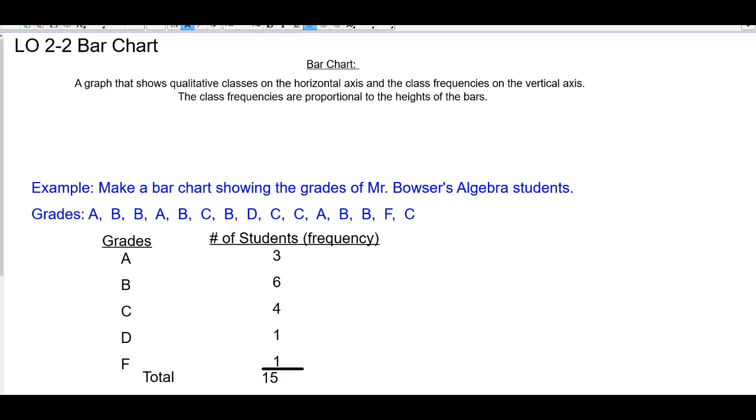Now let's take a look at learning objective 2-2, bar charts. A bar chart is described as a graph that shows qualitative, remember that means non-numeric classes, on the horizontal axis and the class frequencies on the vertical axis.